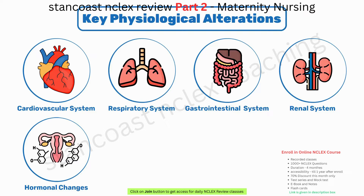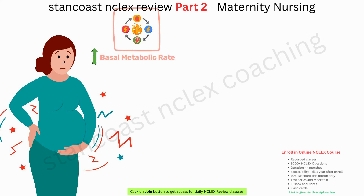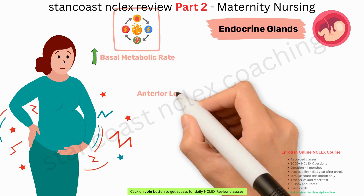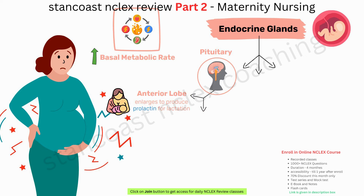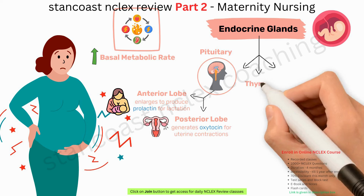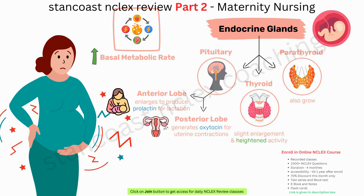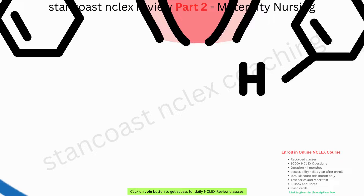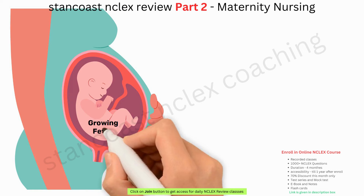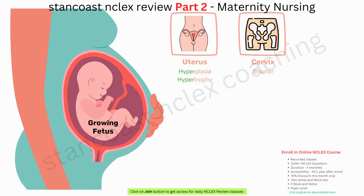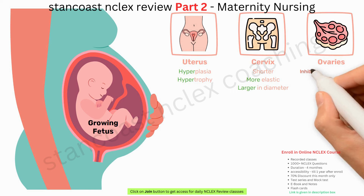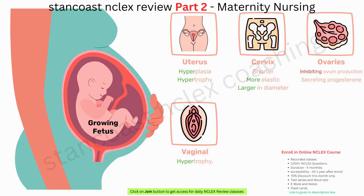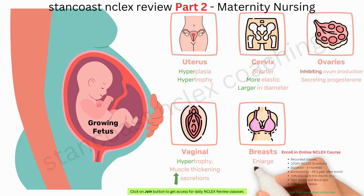Hormonal changes play a pivotal role throughout pregnancy. The basal metabolic rate increases, and the anterior lobe of the pituitary gland enlarges to produce prolactin for lactation, while the posterior lobe generates oxytocin for uterine contractions. The thyroid experiences slight enlargement and heightened activity, and parathyroid glands also grow. In the reproductive system, the uterus undergoes hyperplasia and hypertrophy, while the cervix becomes shorter, more elastic, and larger in diameter. Ovaries inhibit ovum production and secrete progesterone. Breasts enlarge, become tender, and exhibit darker areolae; Montgomery's follicles may hypertrophy, occasionally leading to colostrum leakage.